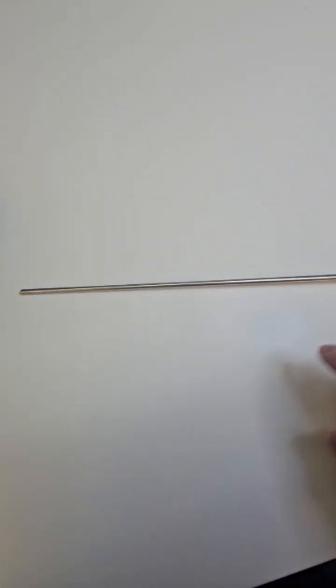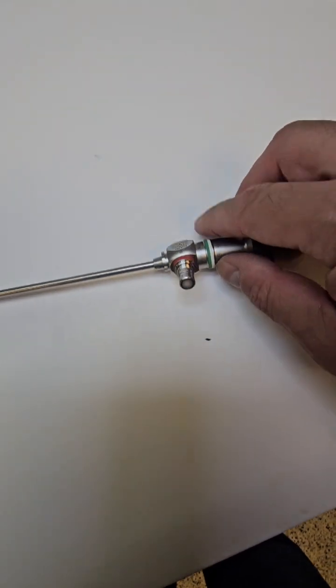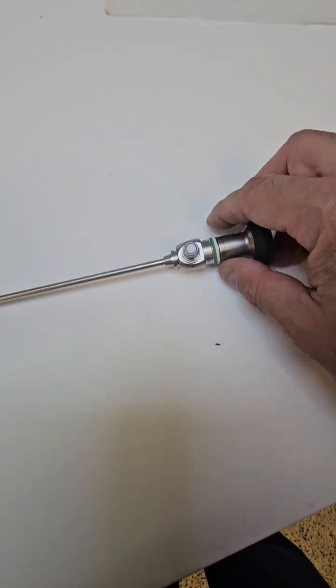First and foremost, you want to inspect the outside. Of course, you're going to inspect for cleanliness, but we're going to inspect for damages on the shaft.